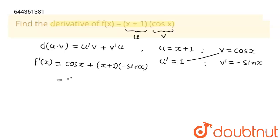Now, this is equals to cos x minus x sin x minus sin x. And this is f dash x, which is derivative of f x. Thank you, students.